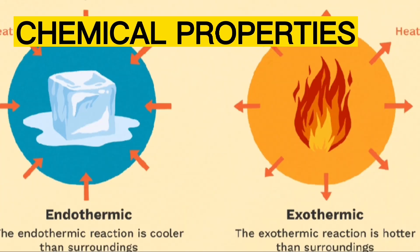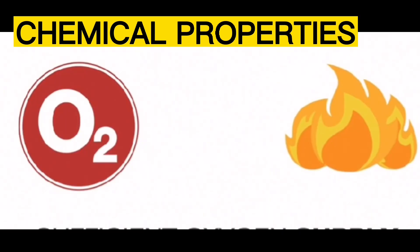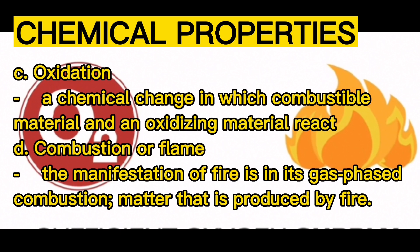Chemical properties: A. Endothermic reaction — changes whereby energy is absorbed or added before the reaction takes place. B. Exothermic reaction — reactions that release or give off energy. C. Oxidation — a chemical change in which combustible material and an oxidizing material react. D. Combustion or flame — the manifestation of fire is in its gas-phase combustion, matter that is produced by fire.